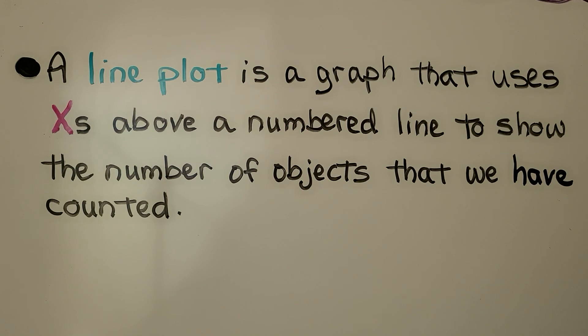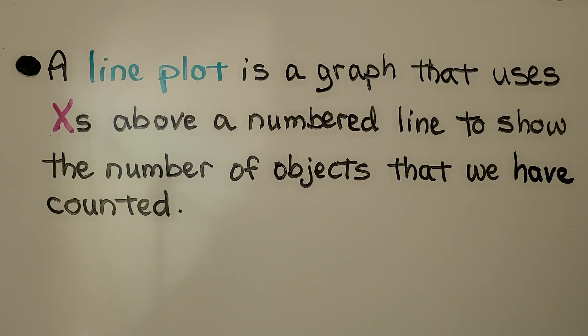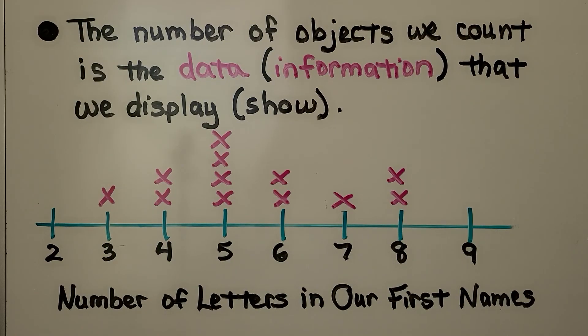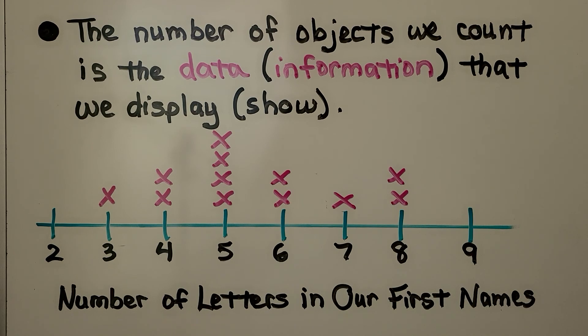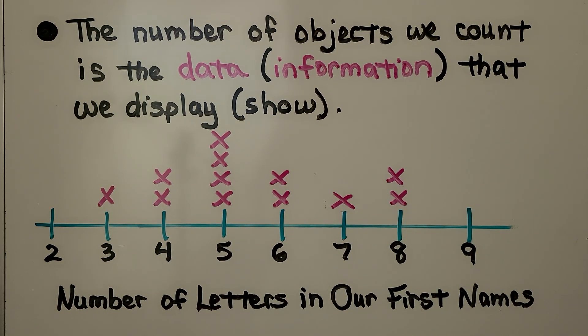A line plot is a graph that uses x's above a numbered line to show the number of objects that we have counted. The number of objects we count is the data. That's the information that we display. Display means to show.